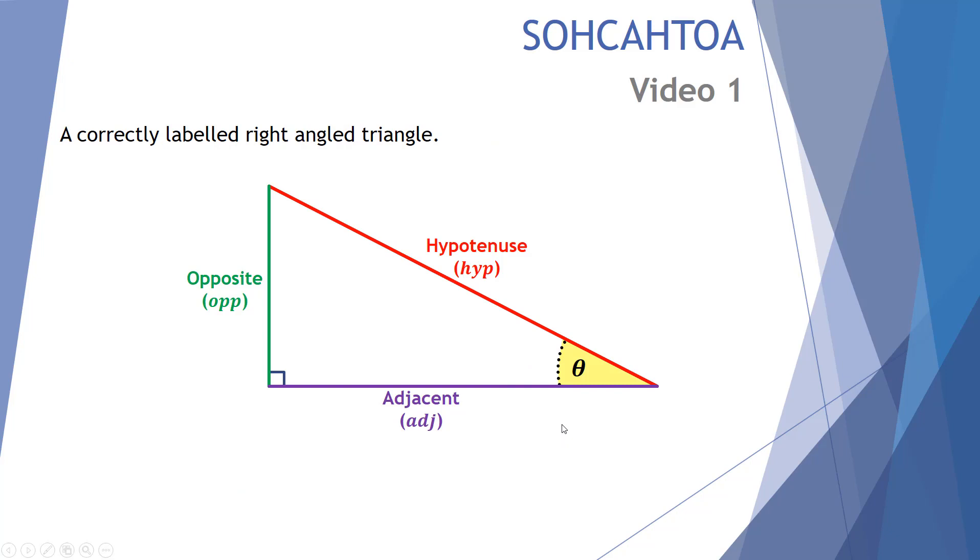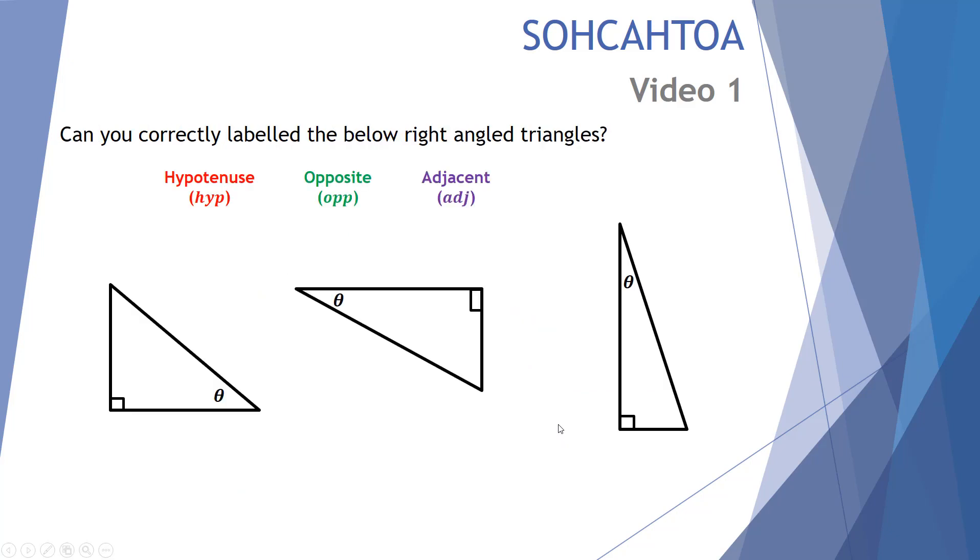So here's our correctly labeled right angle triangle. Let's give you a go at labeling these three triangles in terms of hypotenuse, opposite, and adjacent side lengths. Perhaps pause this video and come back when you've done it.